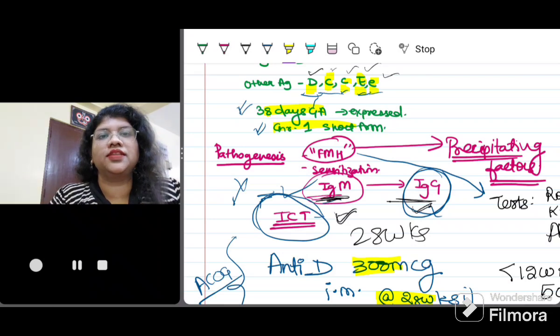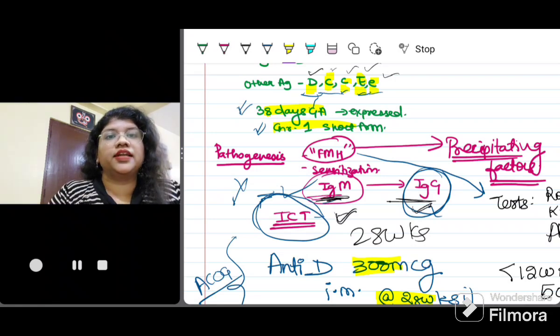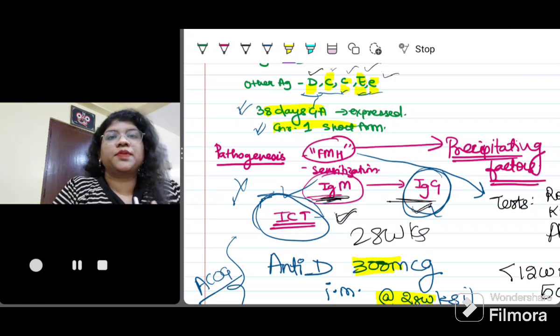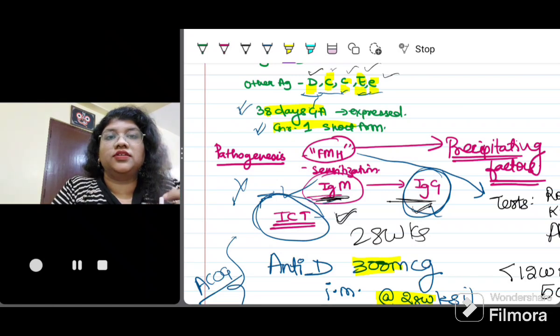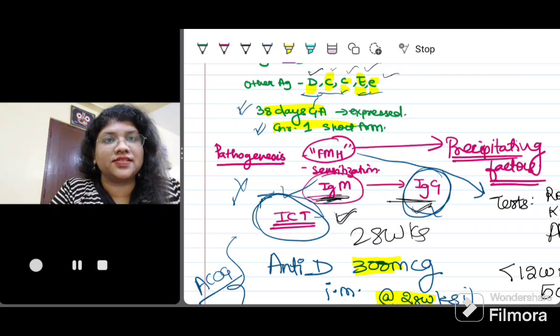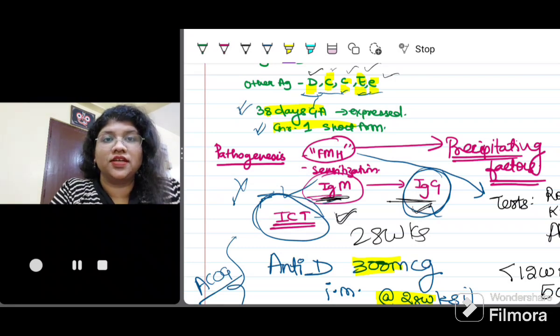What are the conditions which can precipitate fetomaternal hemorrhage? Of course the most important being labor. Apart from that there are other high risk conditions like any abdominal trauma, high risk pregnancy conditions like twins. Also during early pregnancy losses like abortions, manual removal of placenta, molar pregnancies.